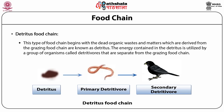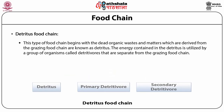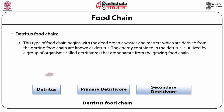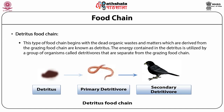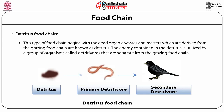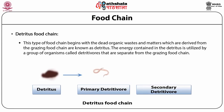The second type is detritus food chain. This type of food chain begins with dead organic wastes and matter derived from the grazing food chain, known as detritus. The energy contained in the detritus is utilized by a group of organisms called detritivores, which are separate from the grazing food chain. The detritus food chain starts with dead and decaying organic matter and moves through microorganisms like bacteria, fungus, etc., to detritus-feeding organisms and then their predators. This chain is not directly dependent on solar radiant energy.